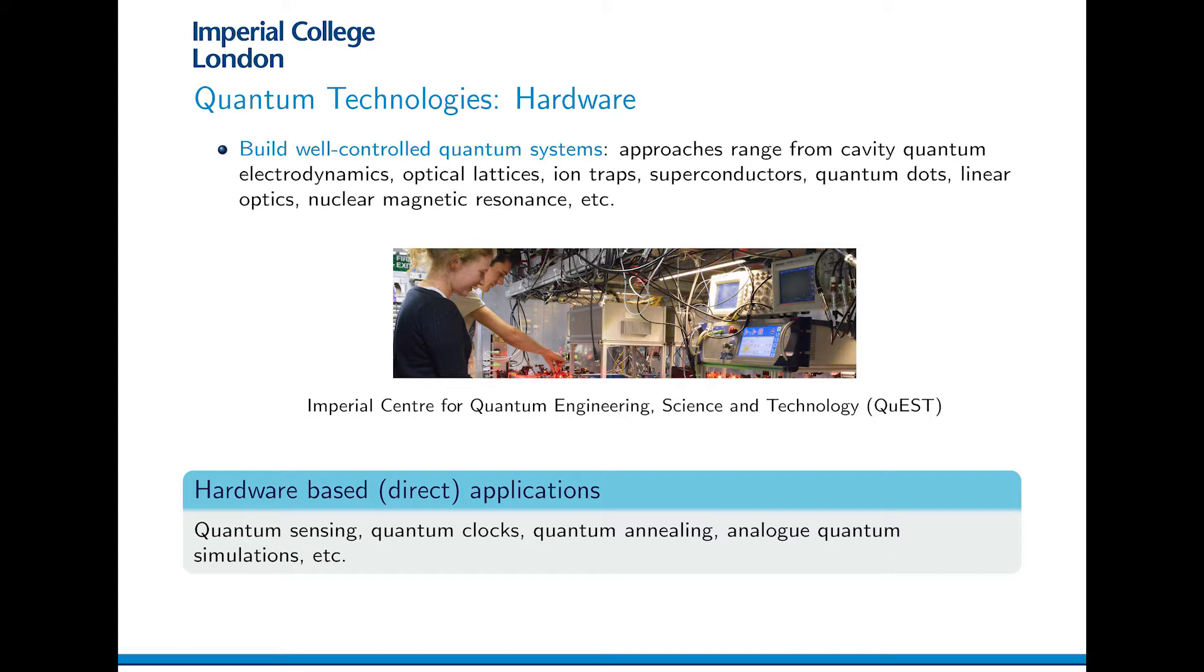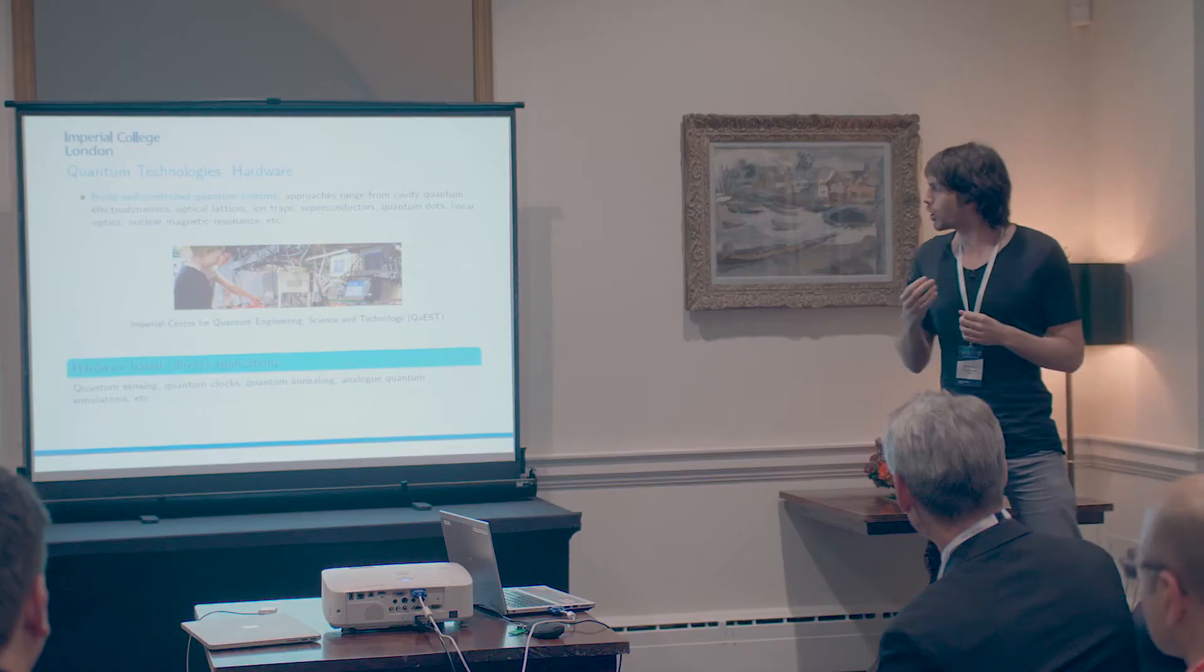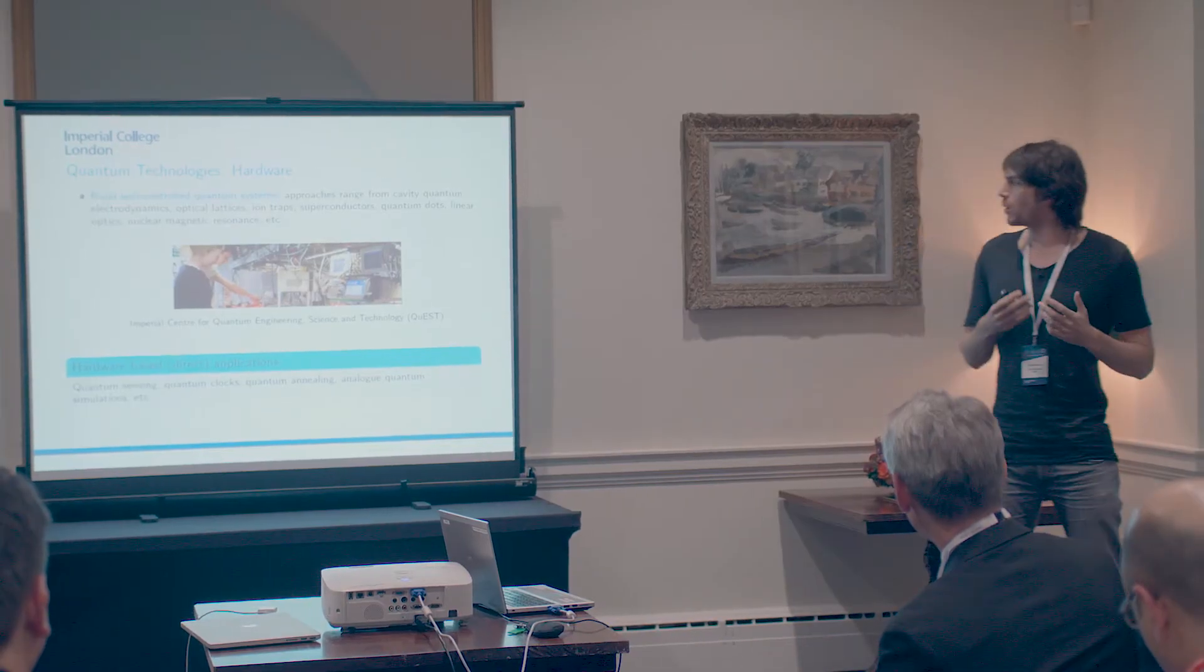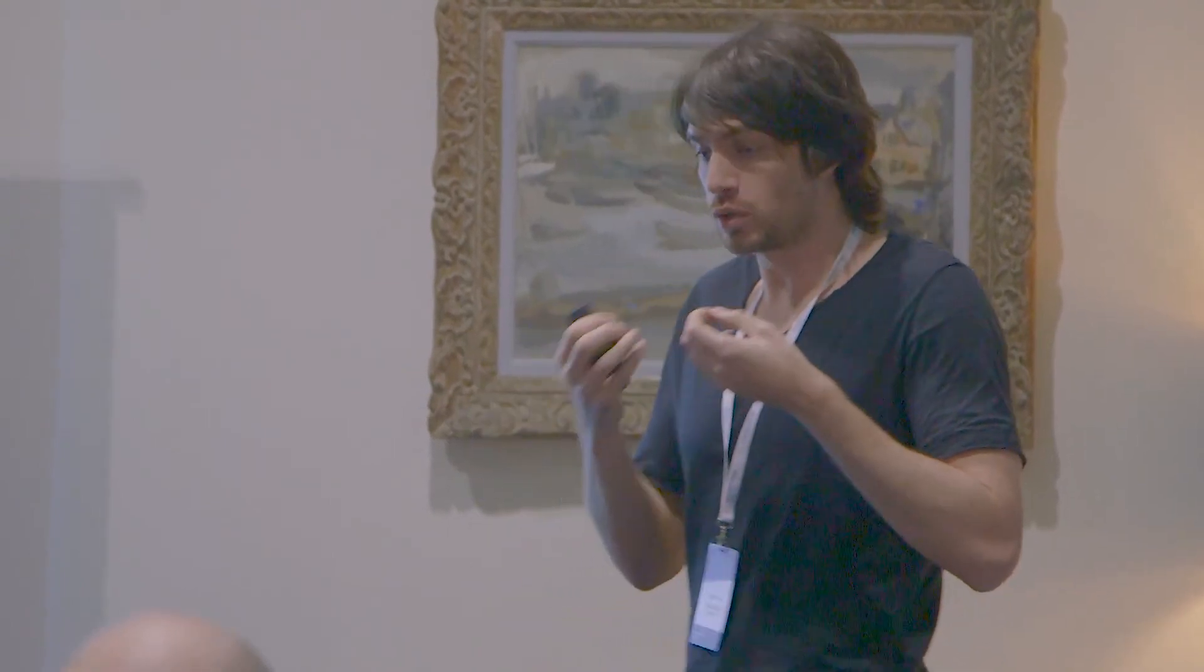And now what we can do with this hardware is we can directly use this hardware for tailored applications. So we also, in these previous talks, we heard a few examples of how this is done. So the examples I have here are quantum sensing, quantum clocks, quantum annealing, or analog quantum simulations. And the point here really is that this kind of quantum hardware can do something better than the classical, the standard hardware could do that we have before.